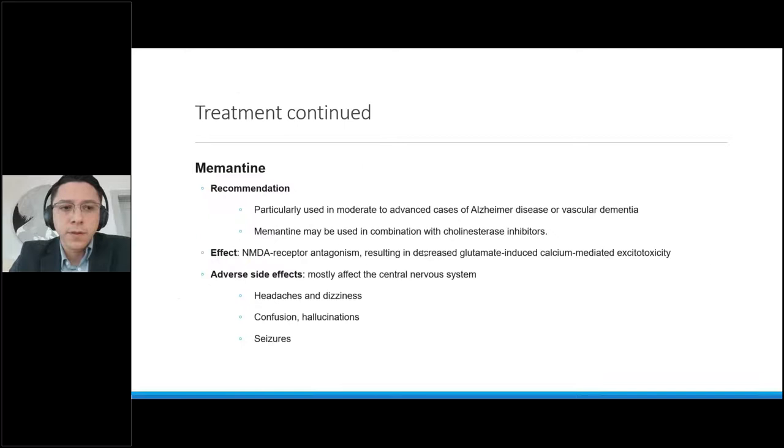Memantine, brand name Namenda, because now it's available in generic, but you will hear that name thrown out there a lot of times because it's used in several other disorders. Now, the recommendation is mostly for our patients that have advanced cases of Alzheimer's disease. But we also use it in folks with milder versions that were unable to tolerate your cholinesterase inhibitors. It is an NMDA receptor antagonist. And the way it's theorized that it works is that it prevents glutamate-induced calcium excitotoxicity. So it becomes kind of neuroprotective in a way. Adverse side effects, headaches and dizziness, confusion, hallucinations, seizures, not as commonly seen. The headaches and dizziness perhaps is the most commonly reported side effect.